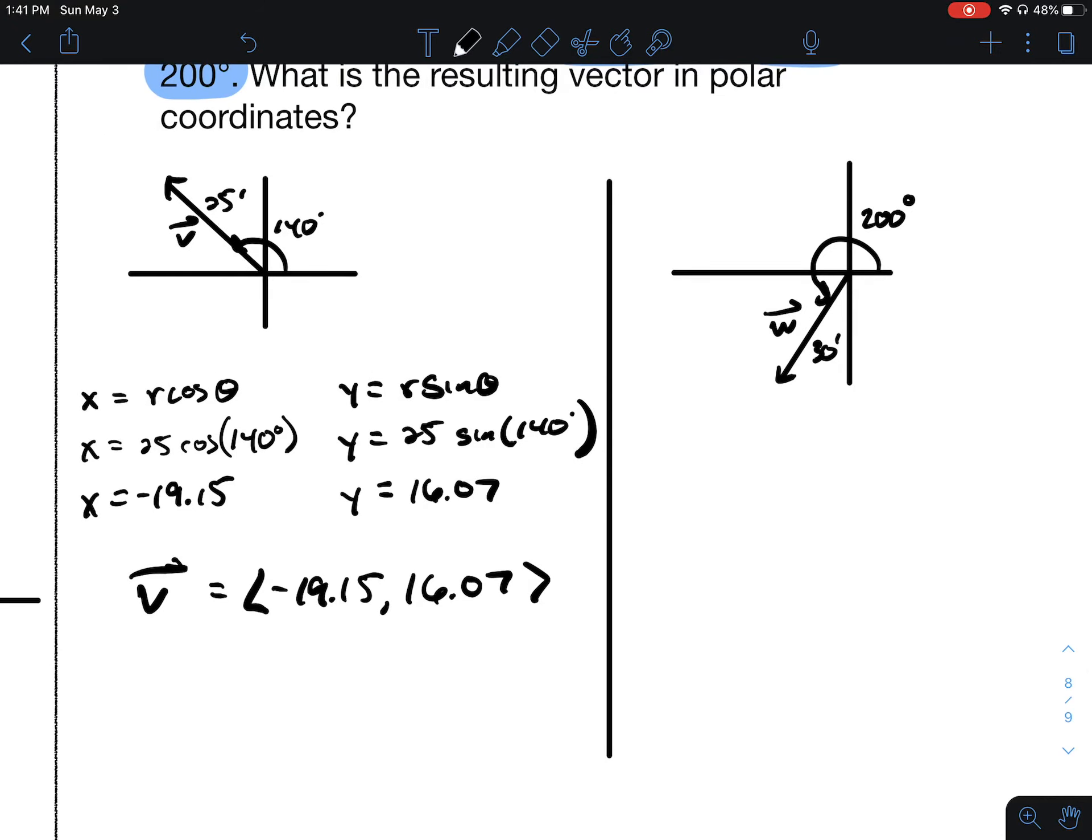I'll do this next one in the more compact version. So vector W is going to be R cosine of theta followed by R sine of theta.